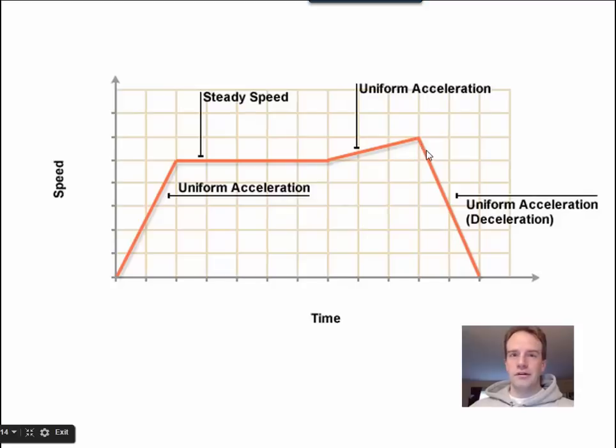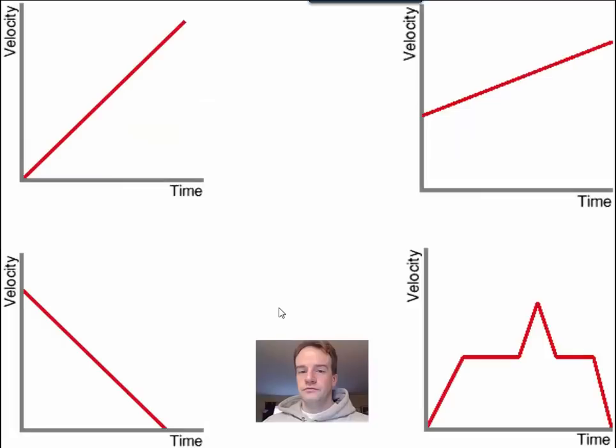And then we have more acceleration here. And the brakes are put on, slowing down here. That's deceleration. Now, look at each of these. What do you think is happening in each of these graphs? Notice it's velocity or speed on this side in time. So we know these are graphs of acceleration.